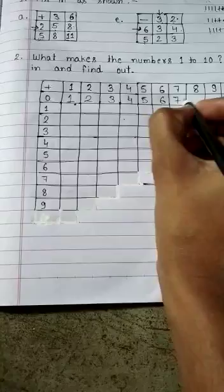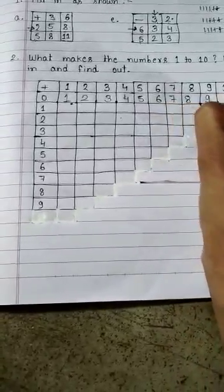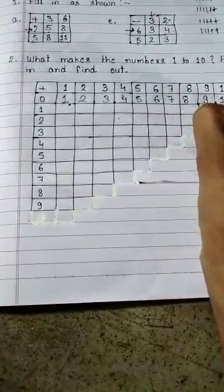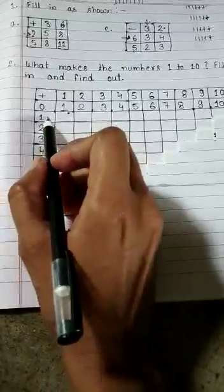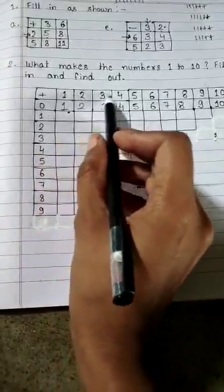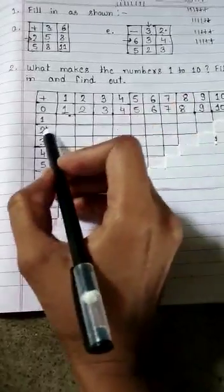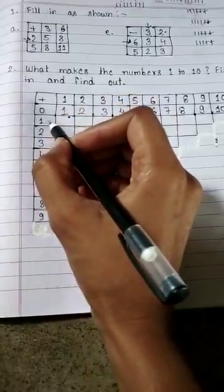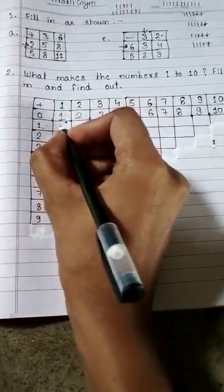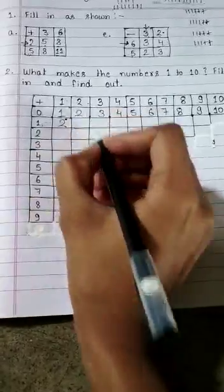7, 8, 9, 10. Now consider this row and this row. You have to add all these numbers 1 by 1 to this one. So when you add 1 and 1, 1 and 2, 1 and 2, here is...